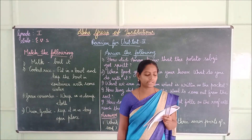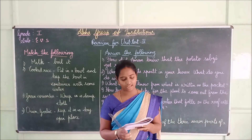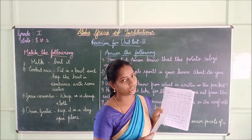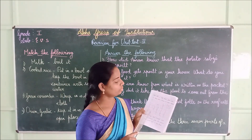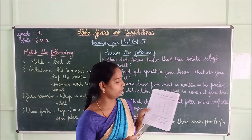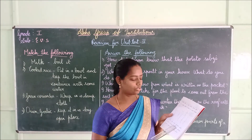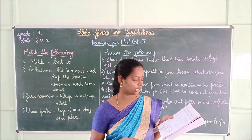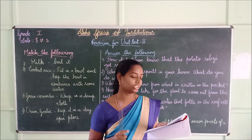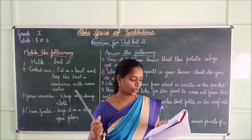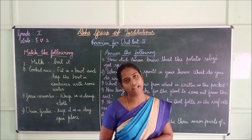How does a big plant grow from a tiny seed? The tiny seed absorbs water and nutrients from the ground and grows into a big plant.